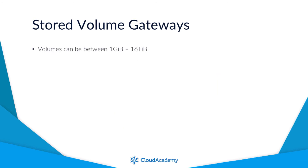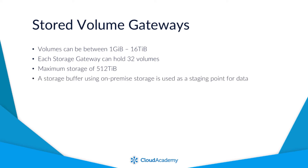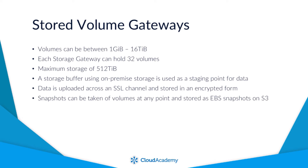Volumes created can be between 1GB and 16TB, and for each storage gateway up to 32 stored volumes can be created, giving a maximum total of 512TB of storage per gateway. Storage volume gateways also provide a buffer using your existing storage disks, which acts as a staging point for data waiting to be written to S3. During the upload process, the data is sent over an encrypted SSL channel and stored in an encrypted format within S3. Storage Gateway also makes it easy to take snapshots of your storage volumes at any point, which are stored as EBS snapshots on S3. These snapshots are incremental, ensuring that only data that has changed since the last backup is copied, helping to minimize storage costs on S3.